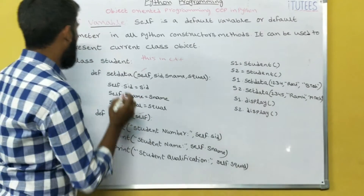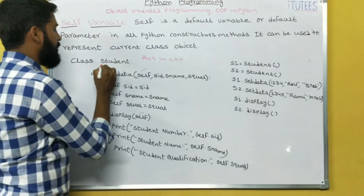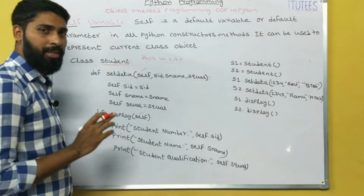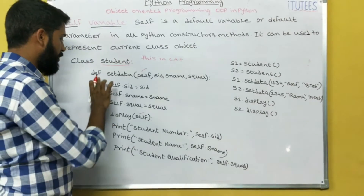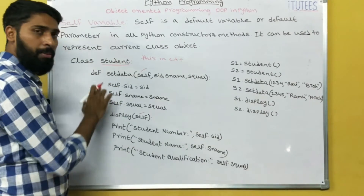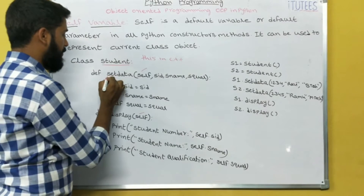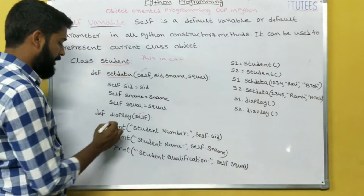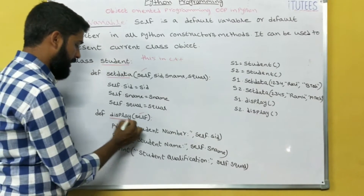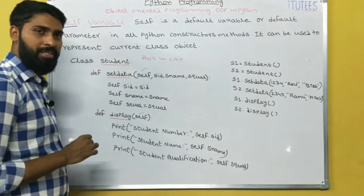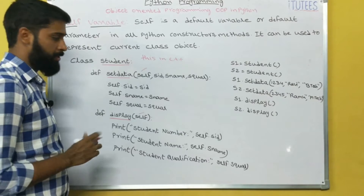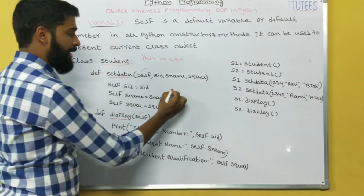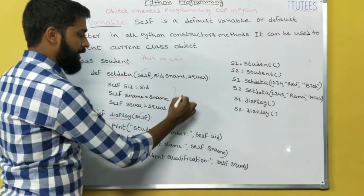This is the class Student. The Student class contains two methods. The first method name is setData and another method name is display. By using these we can assign the data.